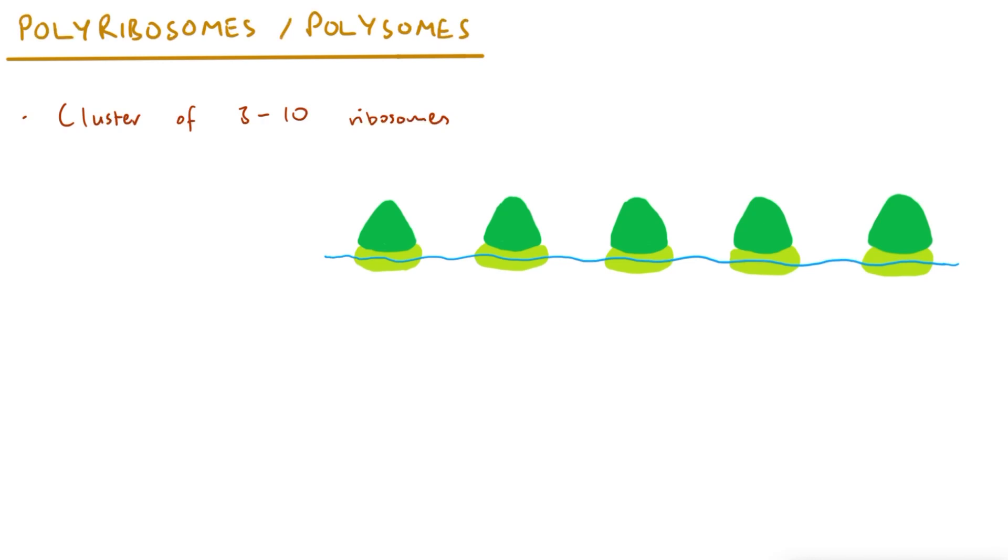Polyribosomes or polysomes are a cluster of ribosomes in a row or within the same area, usually anywhere from 3 to 10 ribosomes.